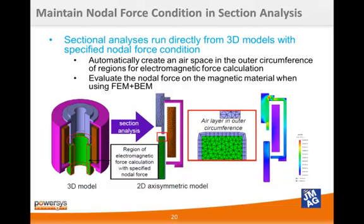Another improvement of the mesh functionality is that the nodal force condition can be incorporated in a sectional analysis. This automatically creates an airspace region in the outer circumference of regions for a more accurate nodal force calculation using FEM plus BEM calculations. In previous analyses, we were not able to do this and thus the accuracy of the analysis would not be as high. But now, with this feature, we can run models such as this actuator and get very accurate results.